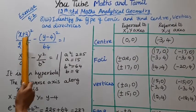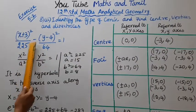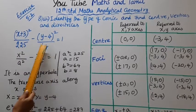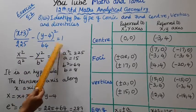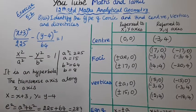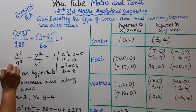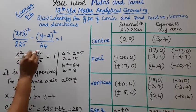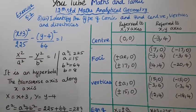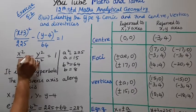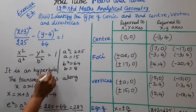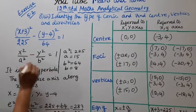The given equation is: (x+3)²/225 minus (y-4)²/64 equals 1. Comparing with the standard form x²/a² minus y²/b² equals 1, since there is a minus sign, it is a hyperbola.